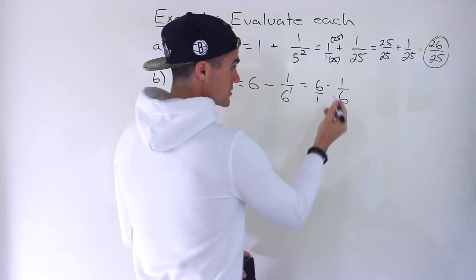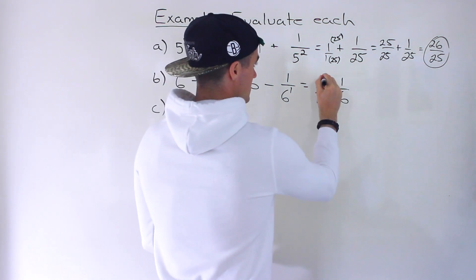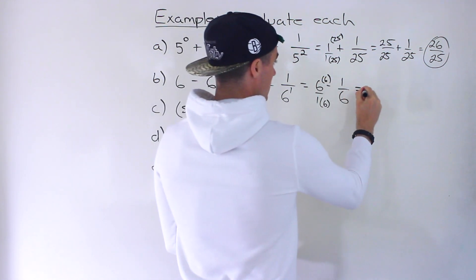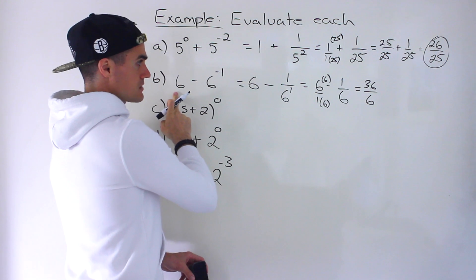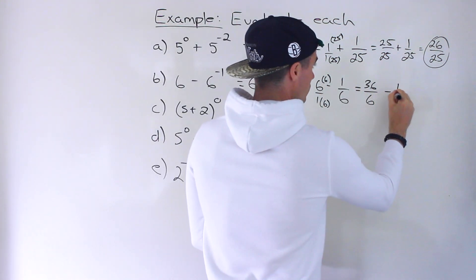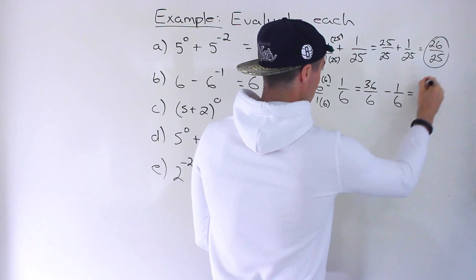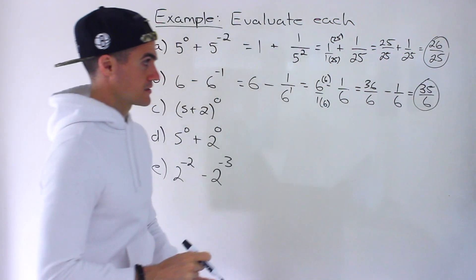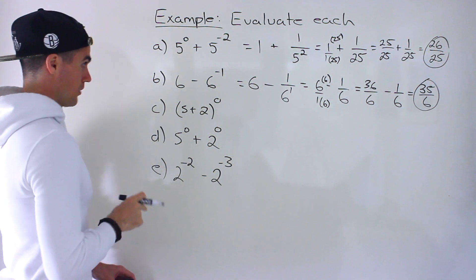The 6 is over 1. Lowest common denominator between 1 and 6 is 6. So we'd end up with 36 over 6, which is the same as 6 minus 1 over 6. And that would give us 35 over 6. So that ends up being the answer to part B.